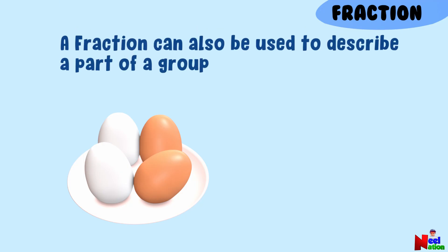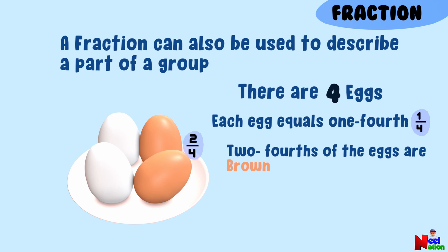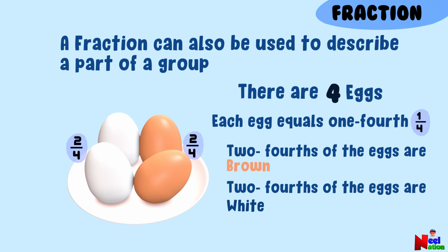Fractions can also be used to describe parts of a group of objects. You have four eggs with two white and two brown. Each egg equals one fourth of the group. What fraction of the eggs are brown and what fraction are white? Two fourths of the eggs are brown, and two fourths of the eggs are white. You are right. Two out of four eggs are brown, so two fourths of the eggs are brown. And two out of four eggs are white, so two fourths of the eggs are white.